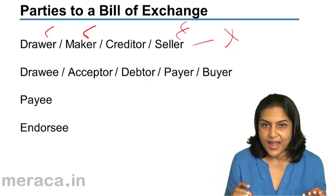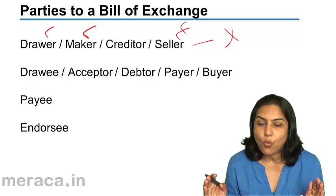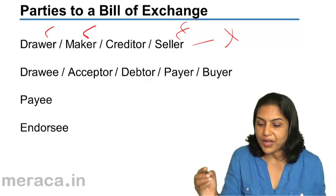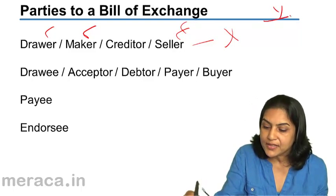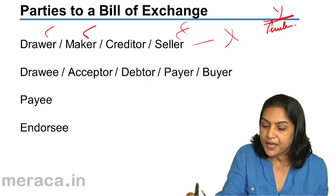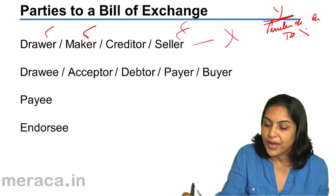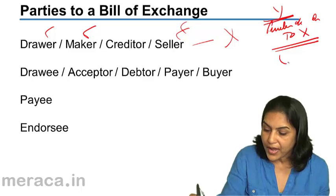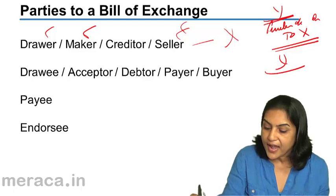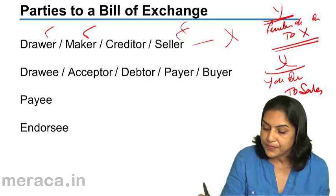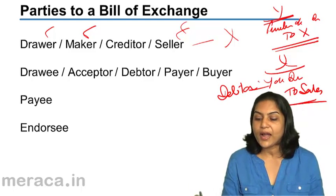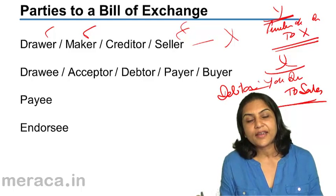X is the creditor. X is the person who has sold the goods; in Y's books, X is shown as a creditor. The accounting entry that Y passes in his books is: purchase account debit to X. X is a creditor in Y's books. Similarly, in the books of X, the entry is: Y account debit to sales. So Y is a debtor in the books of X, while X is a creditor in the books of Y.